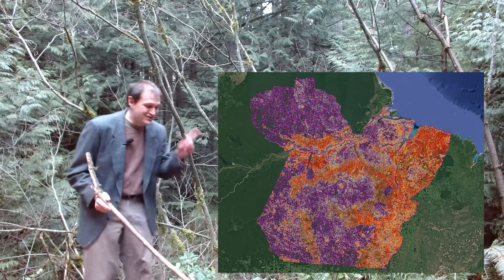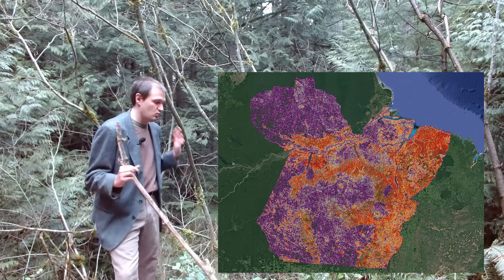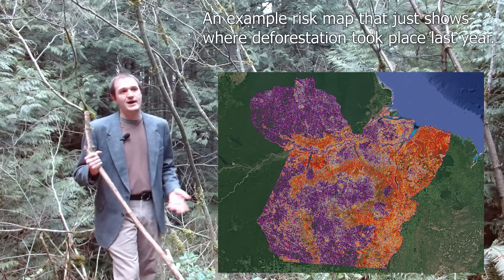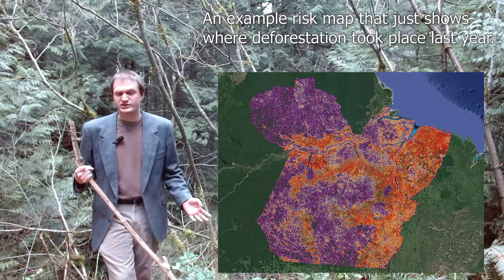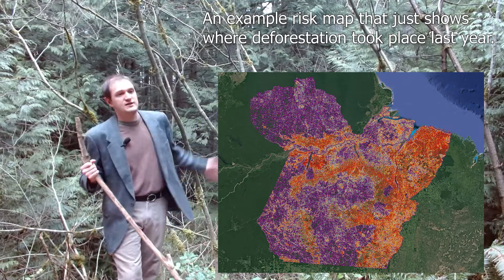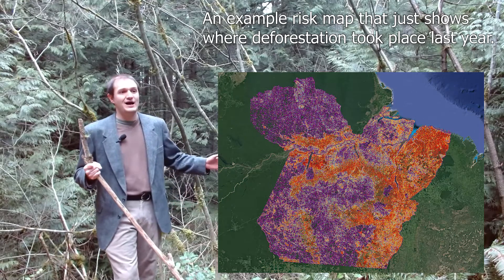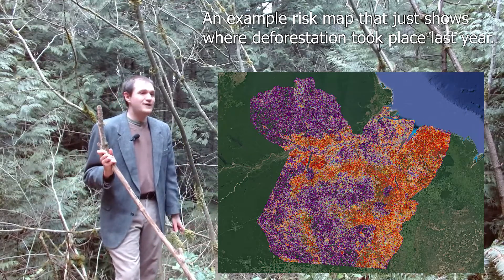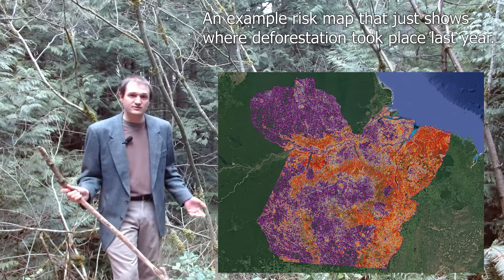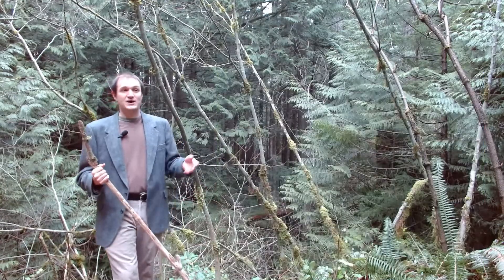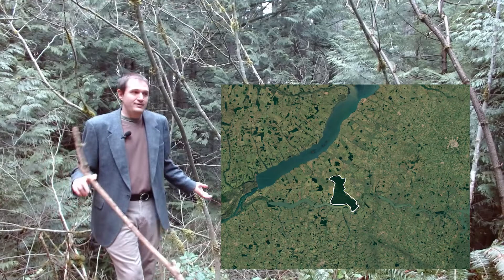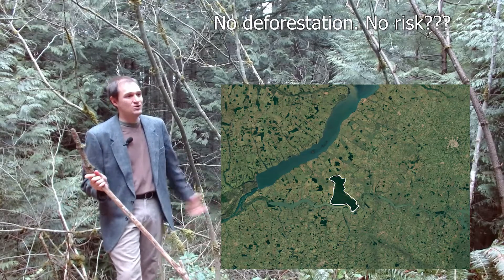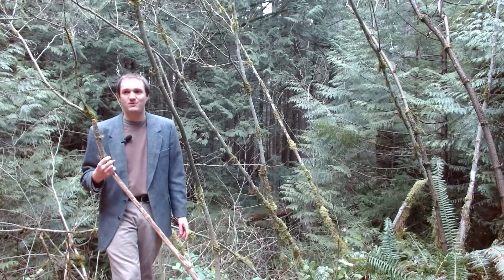One proposed solution is that risk maps would be based on actual performance in the region — for example, taking the deforestation around the project that occurred in the last 10 years as the risk map. So if 20 percent of the area around the project has been deforested, then the risk is 20 percent. But again, we run into the same issues: if you've got a project surrounded on all sides by no forest because all the forest has been cut down, then your risk map is going to be zero, which is ridiculous. And likewise, there are just a thousand ways that you can manipulate these risk maps.